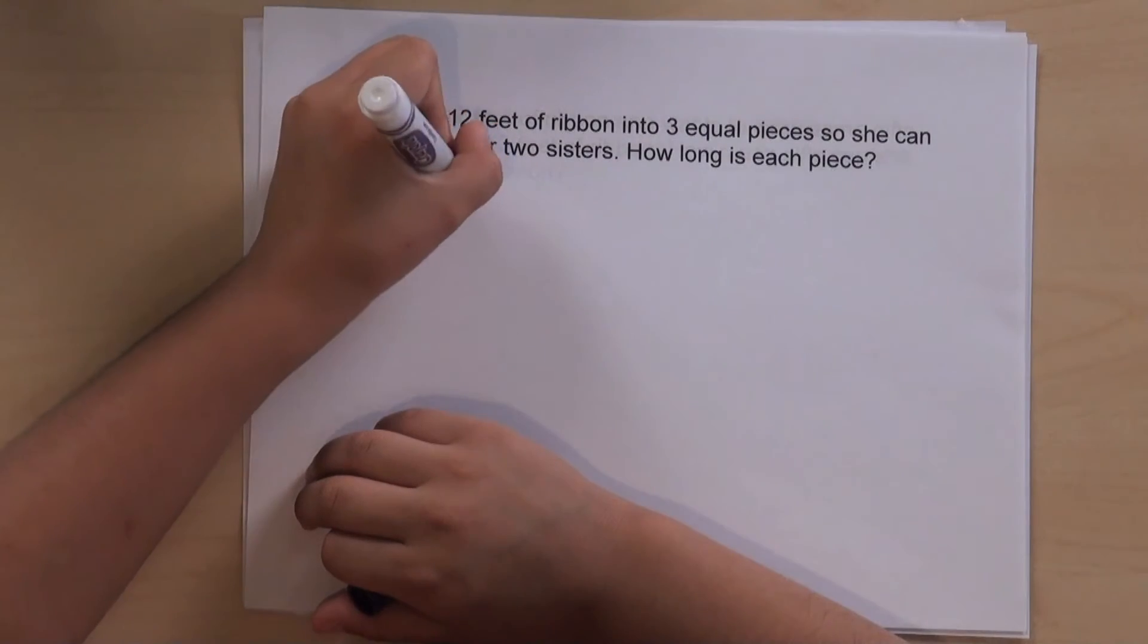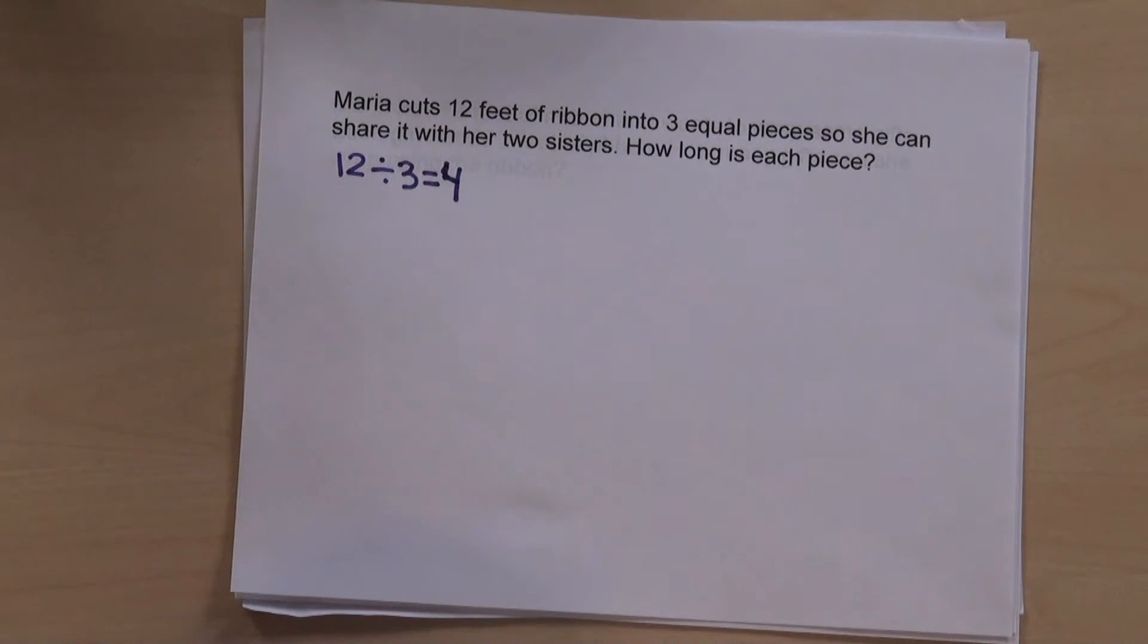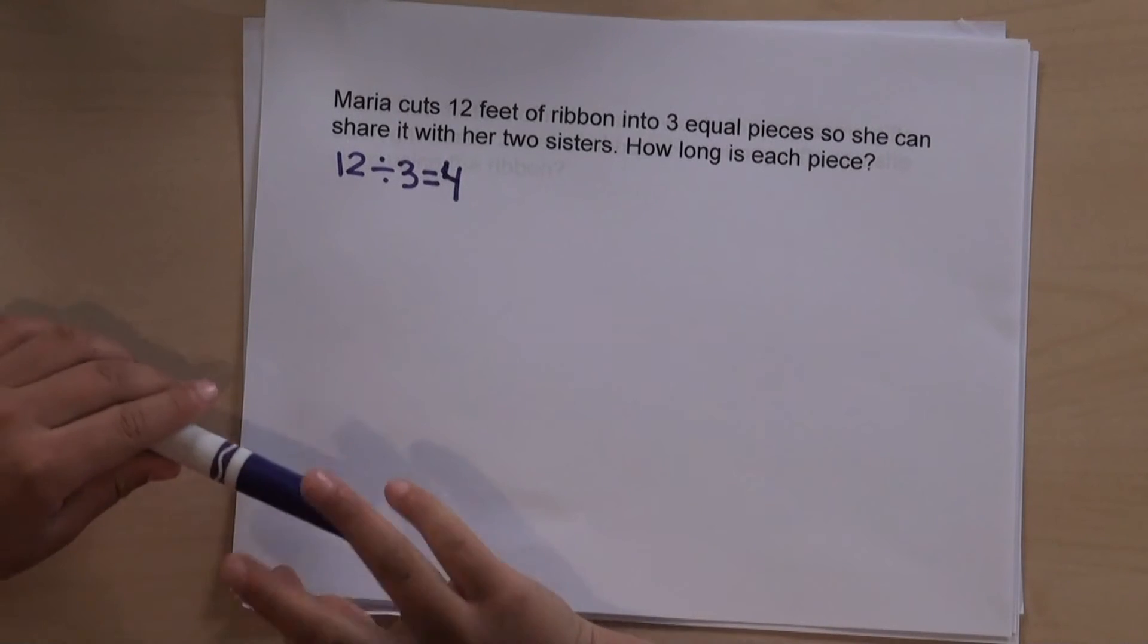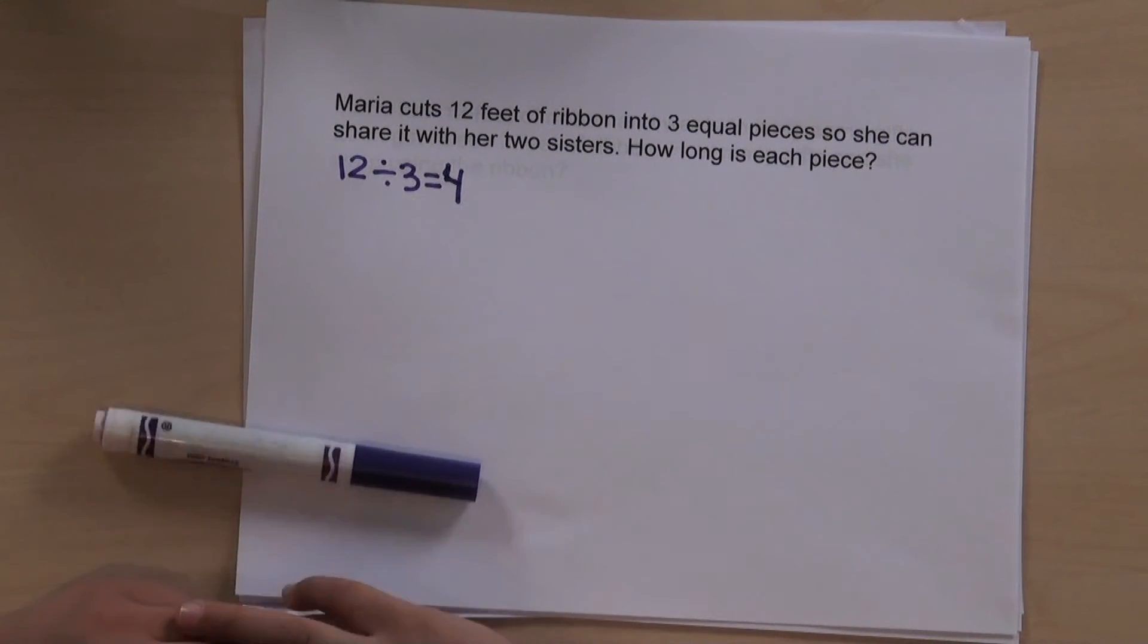Your third grader should be able to explain what each part of a division equation means in relation to a word problem. The number twelve means how many feet of ribbon she has. The number three means how many pieces she could divide into, and the number four means how long each piece is.